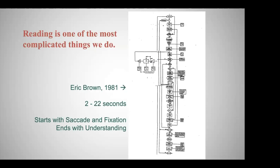I've learned that reading is one of the most complicated things we do. This model takes anywhere from two to 22 seconds. At the top it starts with a saccade — a French word for a flip of the sheet in sailing — and then you have a fixation. For you and me, that fixation where we're seeing characters is 250 milliseconds and spans six to ten character spaces. What happens is you see some of the word, then you take a saccade — very fast, ballistic, about 20 milliseconds — then another fixation, then chugga-chugga, return sweep.